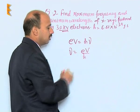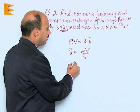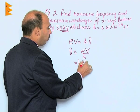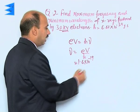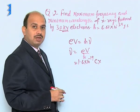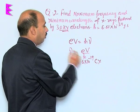And nu is equal to E V upon H. And E V, that is E, is given to you 1.6 into 10 raised to power minus 19 coulomb. V is a potential difference that is given to 30 kilovolt.